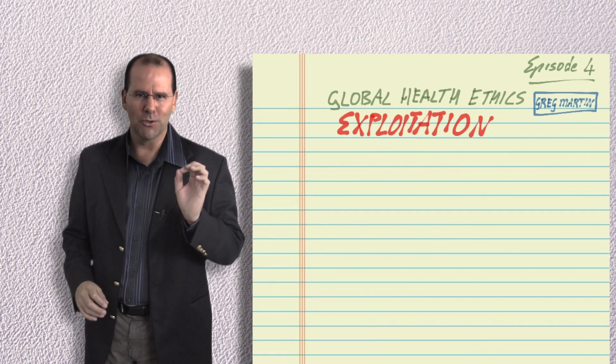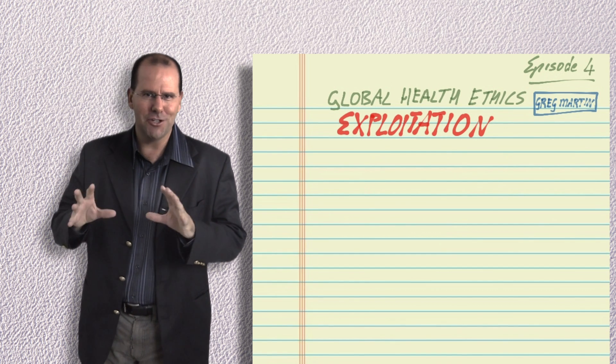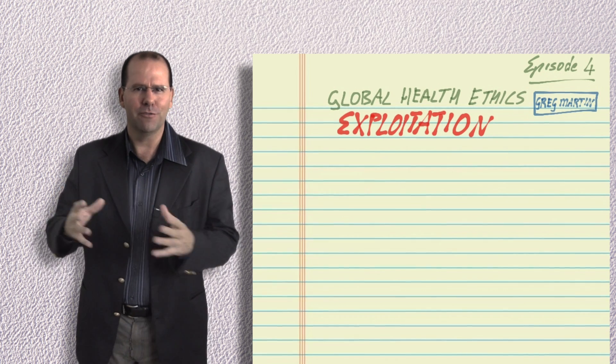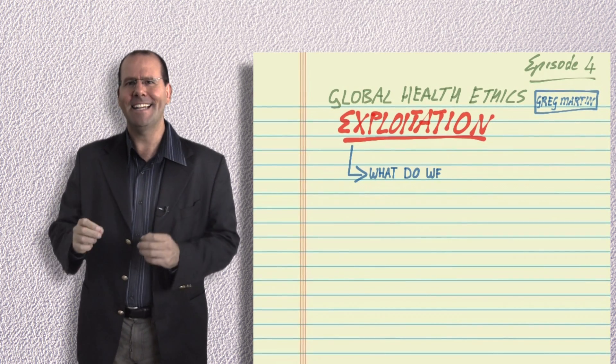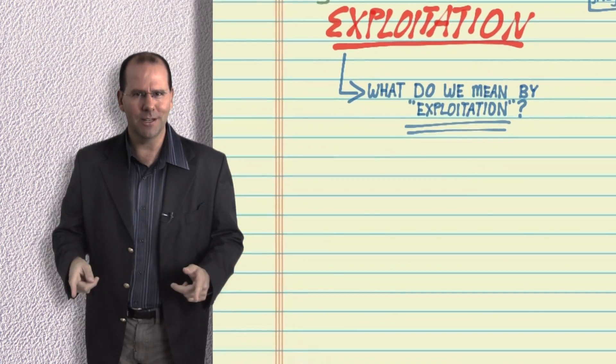Now an extreme libertarian would of course argue that provided the exchange is voluntary, it represents the best option for both parties and therefore can't possibly be exploitative. So what exactly do we mean by exploitation and where should society draw the lines?